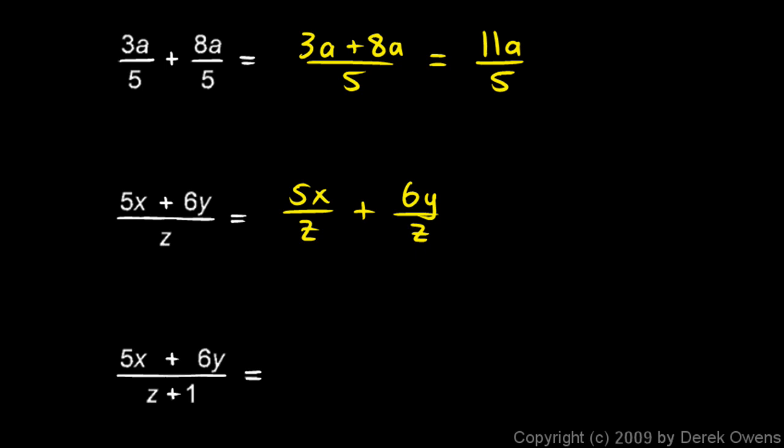But don't get tricked when there's an expression in the denominator. 5x plus 6y over this will be 5x over this plus 6y over this. Note that this problem is almost identical to the one above it. The only difference is this plus 1 in the denominator.